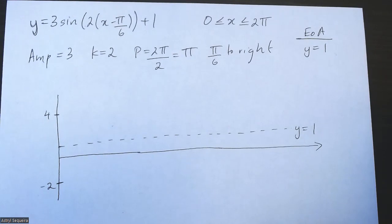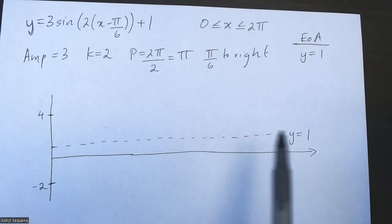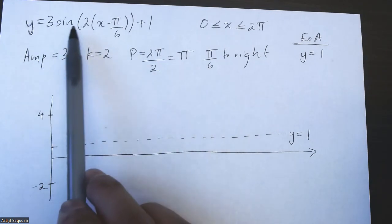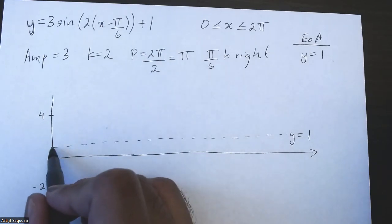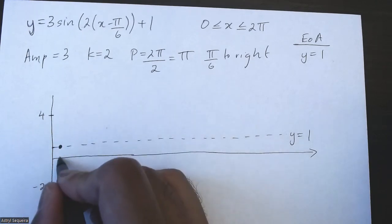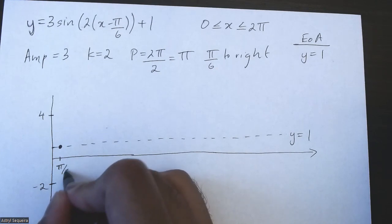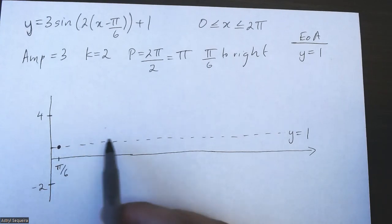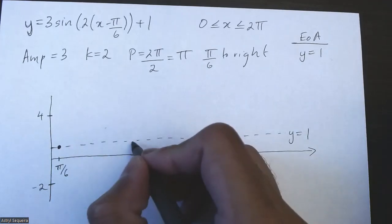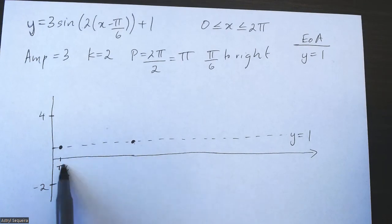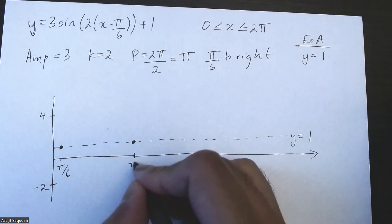Now we can start with the actual function. The period of this function is pi, and it's a positive sine function. A positive sine function would normally start on the axis, but this one is shifted to the right by pi over six units. So my first point has an x value of pi over six. Then I want to go to my last point of the first period, which is this point plus a period: pi over six plus pi equals seven pi over six.